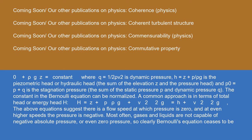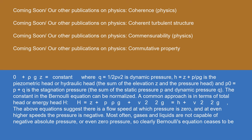The above equation suggests there is a flow speed at which pressure is zero, and at even higher speeds the pressure is negative. Most often, gases and liquids are not capable of negative absolute pressure or even zero pressure, so clearly Bernoulli's equation ceases to be valid before zero pressure is reached. In liquids, when the pressure becomes too low, cavitation occurs. At higher flow speeds in gases, or for sound waves in liquid, the changes in mass density become significant so that the assumption of constant density is invalid.